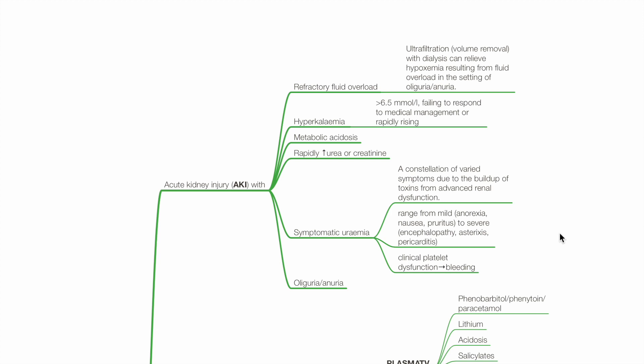These include acute kidney injury with refractory fluid overload, refractory hyperkalemia, metabolic acidosis, rapidly increasing urea and creatinine, symptomatic uremia, oliguria and anuria.